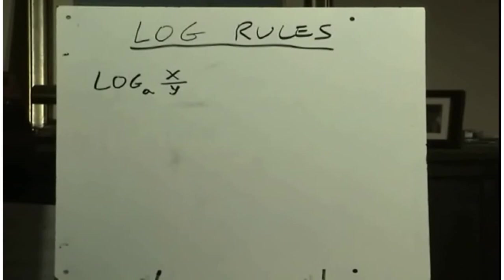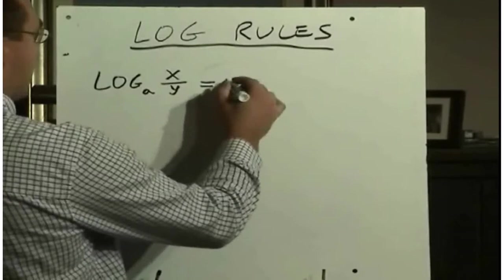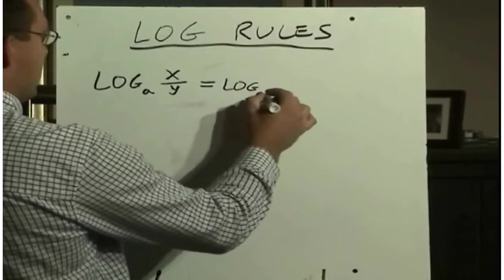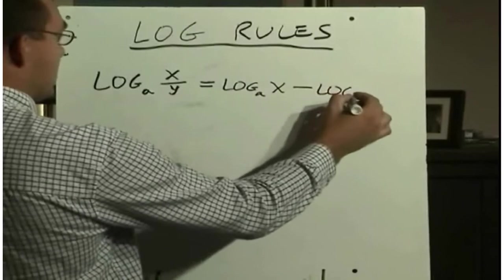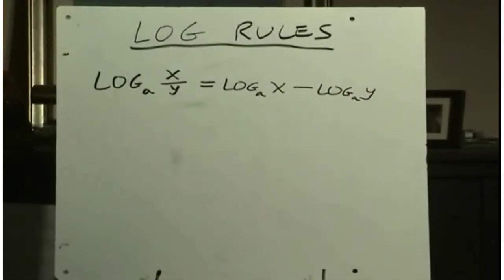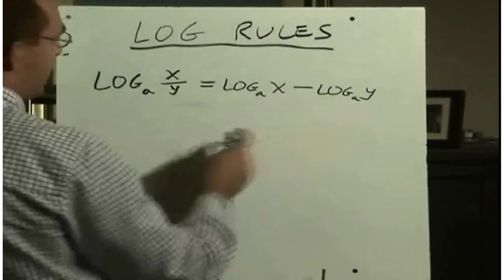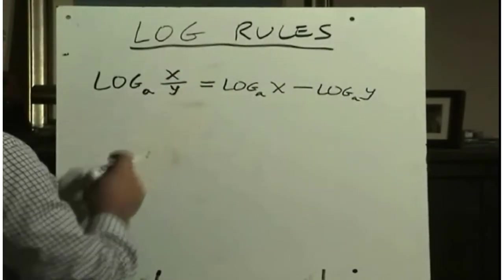And you can probably guess that there will also be one for division. Log base A of x divided by y will be log base A of x minus log base A of y. So if we have two things subtracting each other, we can write that as a single logarithm, and it will be the logarithm of their quotient.